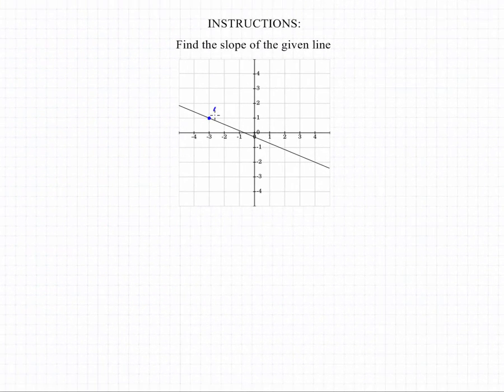In this problem we're asked to find the slope of a given line, and we can always do so by identifying two points. So if we identify (-3, 1) and (4, -2), we can write them out.